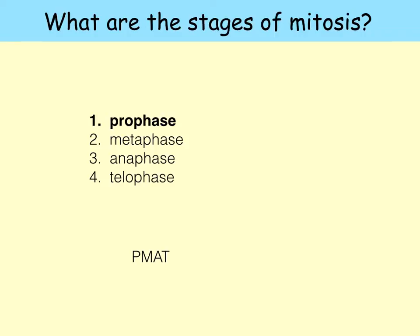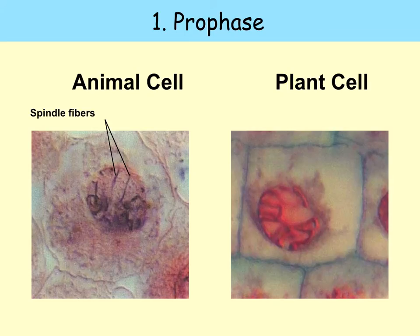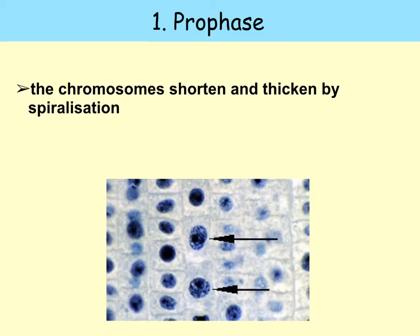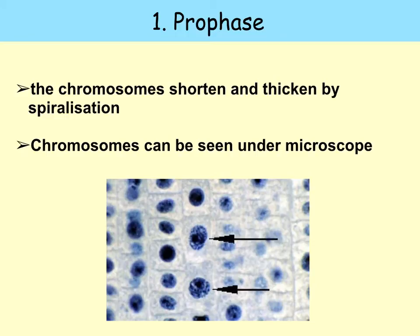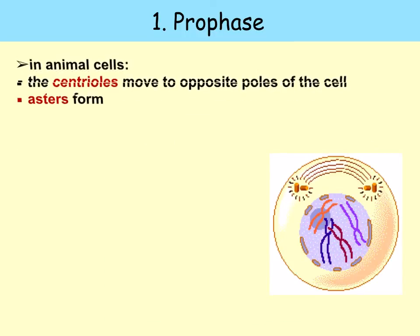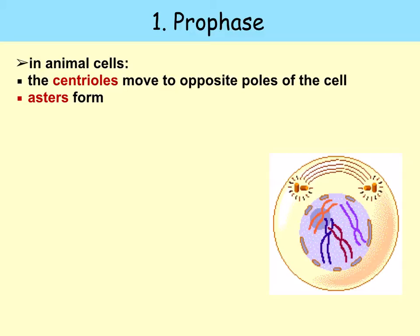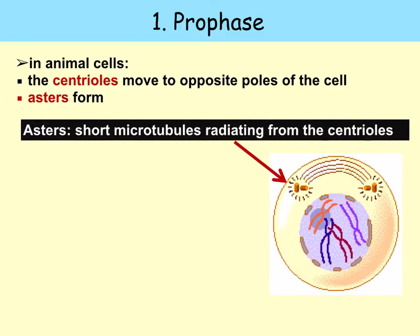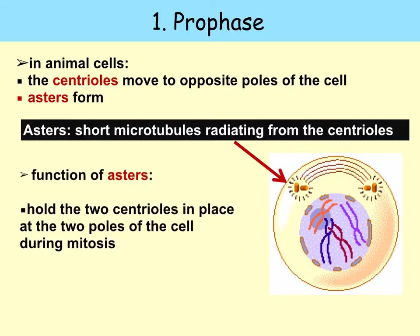Let's have a look at prophase in more detail — here you can see prophase in a plant cell and an animal cell. During prophase, the chromosomes shorten and thicken by spiralization. The DNA winds around positively charged histones to form clusters, and these further interact and coil by spiralization. This means that the chromosomes can be seen under a microscope. In animal cells, the centrioles move to opposite poles of the cell and asters form — these are short microtubules radiating from the centrioles — and they hold the two centrioles in place at the two poles of the cell during mitosis.